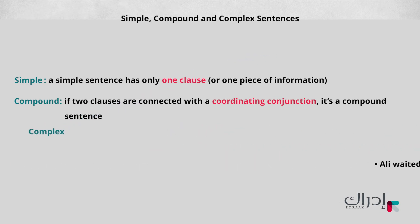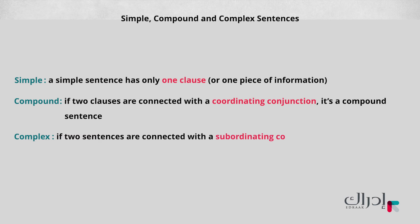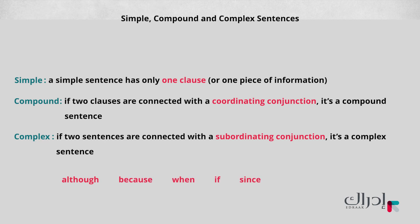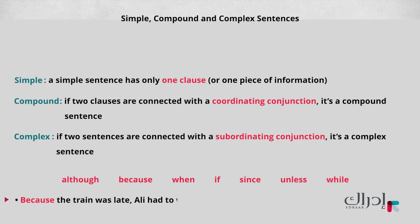The last type is complex. If two sentences are connected with a subordinating conjunction, it's a complex sentence. Although, because, when, if, since, unless, and while are examples of subordinating conjunctions. Look at this sentence as an example: Because the train was late, Ali had to wait.